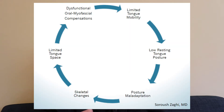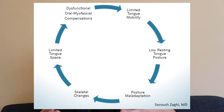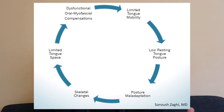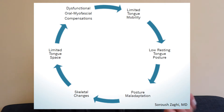Here is that cycle: you have low resting tongue posture and postural maladaptation. You get skeletal changes that lead to further limited tongue space. Then you get dysfunctional oral myofascial compensations — such as thrusting your tongue forward when you swallow, or mouth breathing as another compensation — and that further reduces tongue mobility, and so on. There are also other factors not fully explained, such as nasal breathing and septal issues.